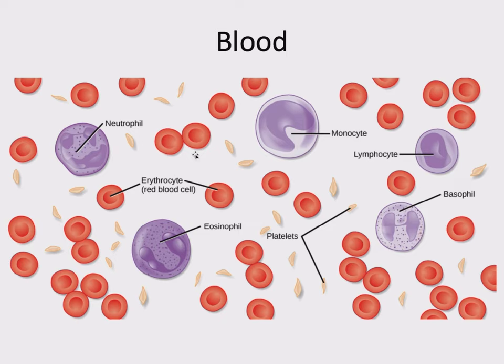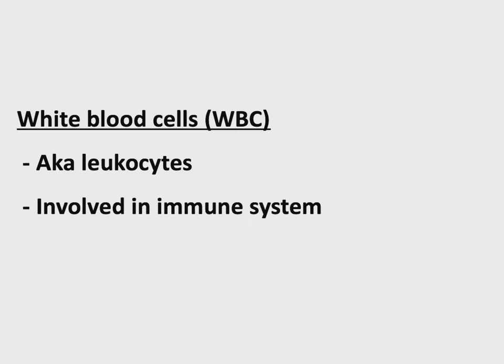What about all these white blood cells? I'm going to kick the can down the road and not really talk about these at all — I'm going to save it for the immune system chapter. White blood cells, abbreviated WBC, also known as leukocytes, are involved in the immune system. We'll get into more of their function and the different types when we get to that chapter.